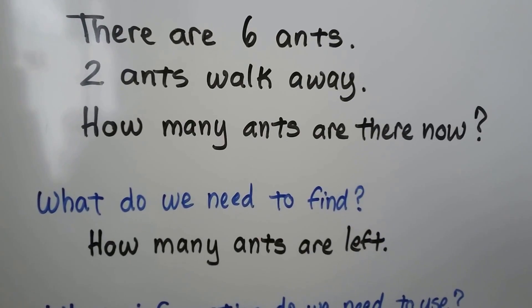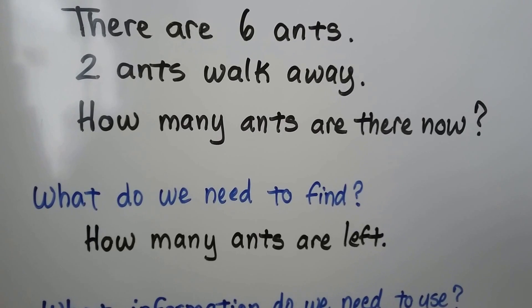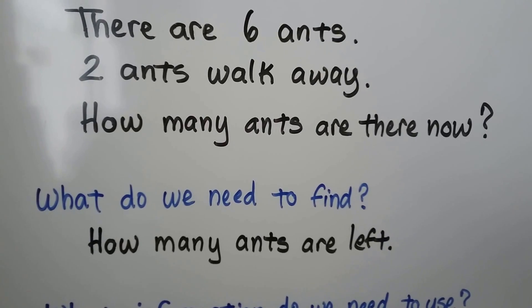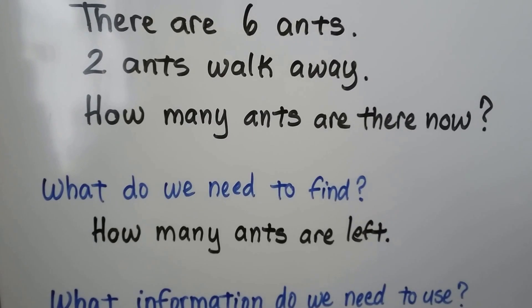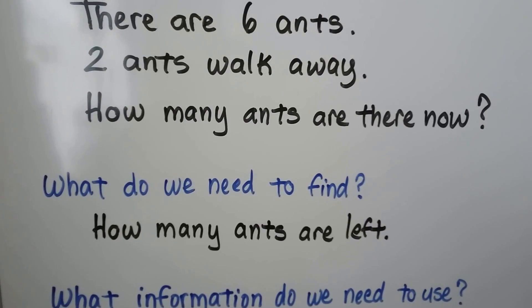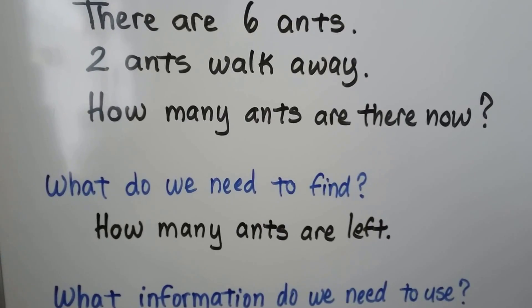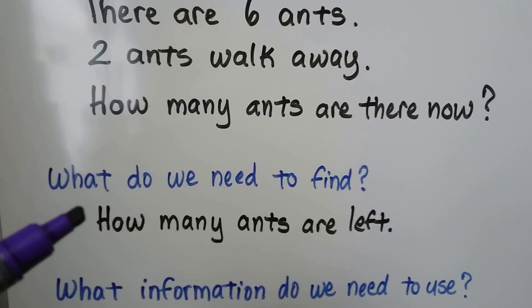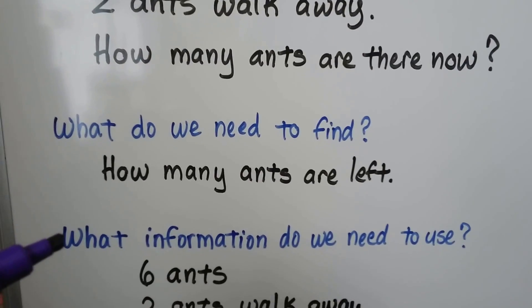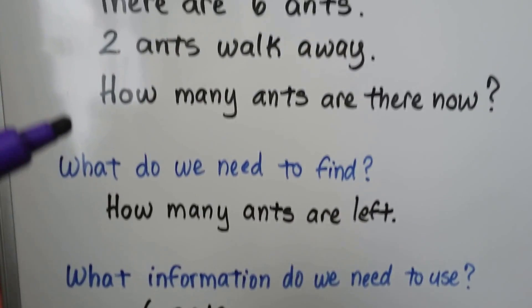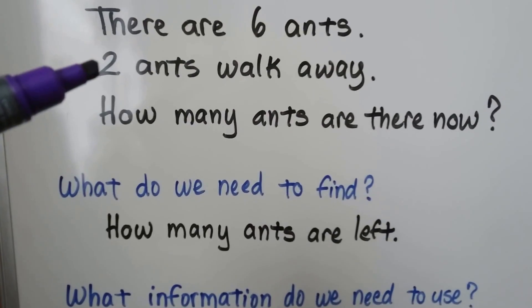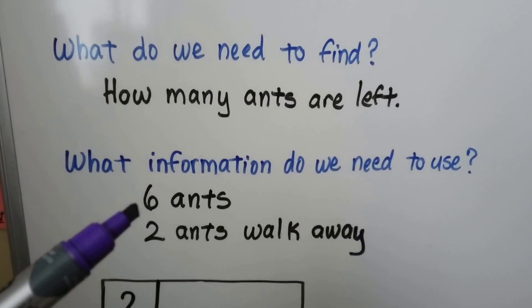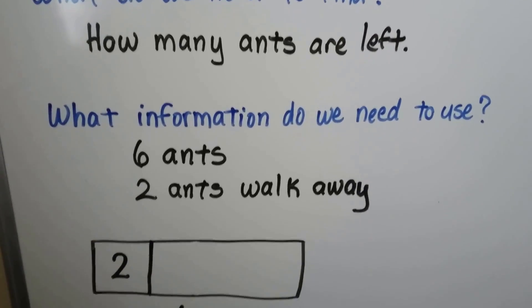There are six ants. Two ants walk away. How many ants are there now? We ask ourselves, what do we need to find? We need to find how many ants are left. What information do we need to use? There were six ants and two ants walk away.